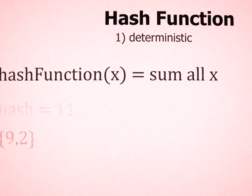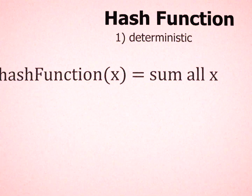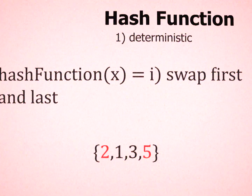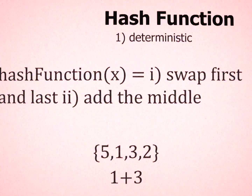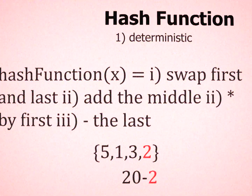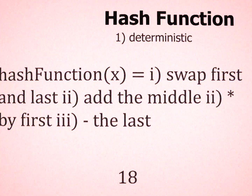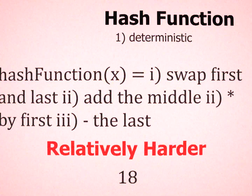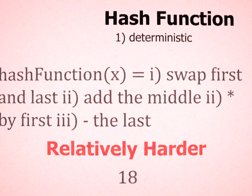To prevent this, we can make your function stricter. Like, instead of just adding, let's swap the first and last number and the middle numbers, multiply by the first number, and subtract the last number. With this rule, it is a bit harder to find an input that produces that hash just by having a hash.